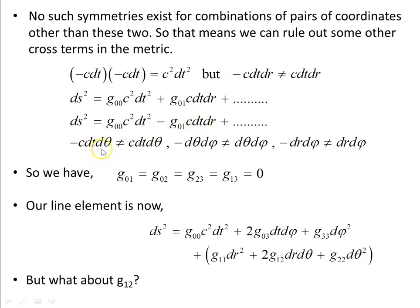As a result, the following cross terms are ruled out: −c dt dθ, dθ dφ, and dr dφ. This means g₀₁, g₀₂, g₂₃, and g₁₃ are all zero — they are not invariant under reversal of the coordinates.